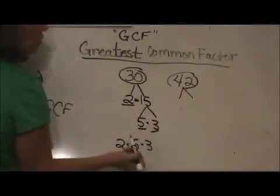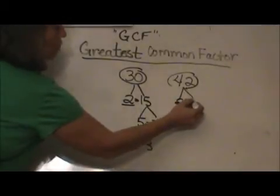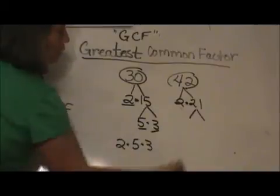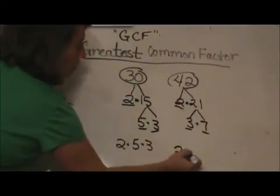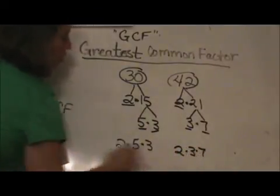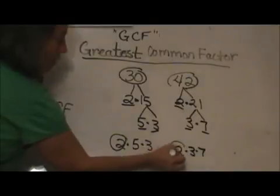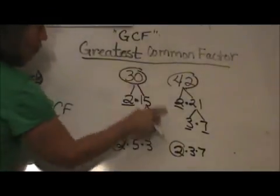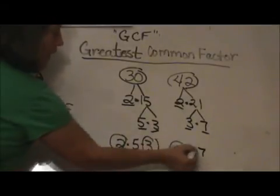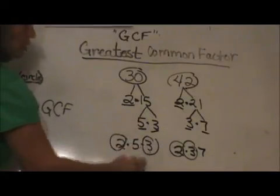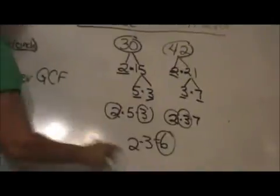Now let's do the prime factorization for 42. Since 42 is an even number, I write 2 down — that's 2 times 21. Then 21 factors into 3 times 7. So those are my 3 prime factors: 2 times 3 times 7. That's step 1, prime factorization done. Now I circle the common factors: both 30 and 42 have 2 as a common factor, and both have 3 as a common factor. So I multiply 2 times 3, and that gives me my greatest common factor of 6.